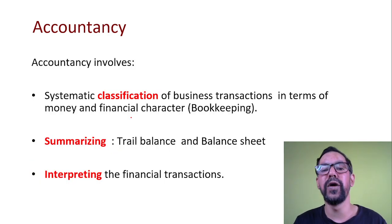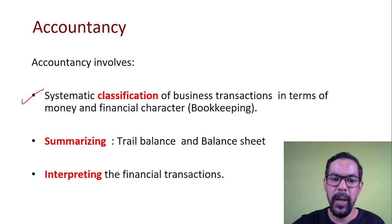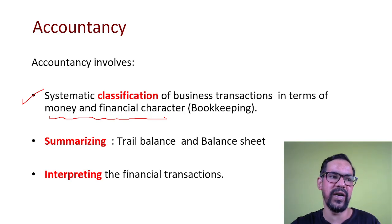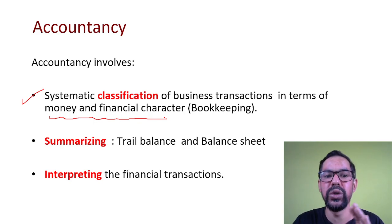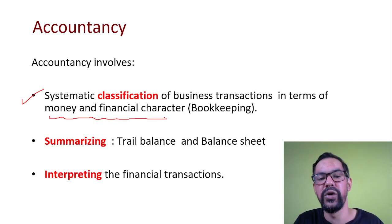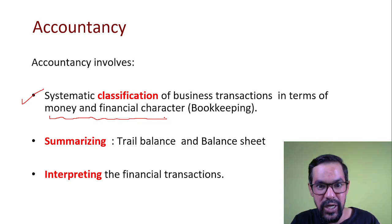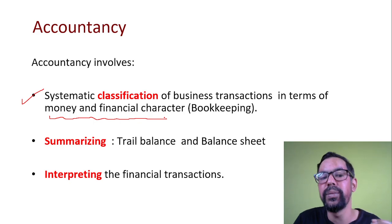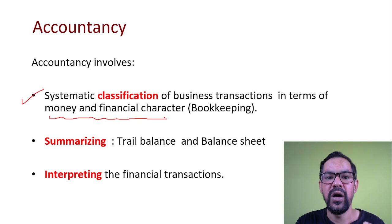There are a few key things about accountancy. First, there is systematic classification of business transactions in terms of money and financial character. For example, paying salaries to employees is a money transaction and is part of the accountancy process. Making an investment in securities also has financial character and is included. However, notional profit or the health of the business owner is not considered part of the accountancy process.